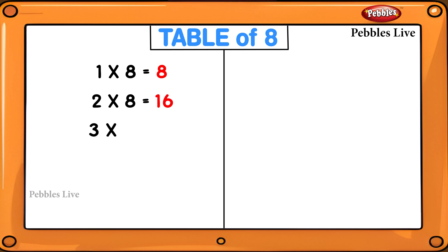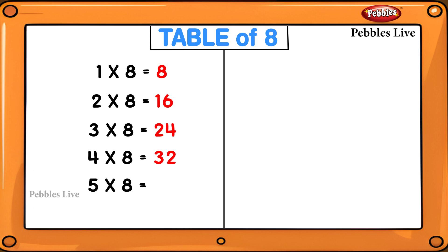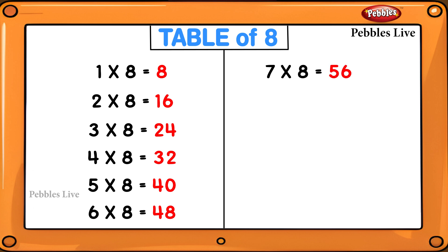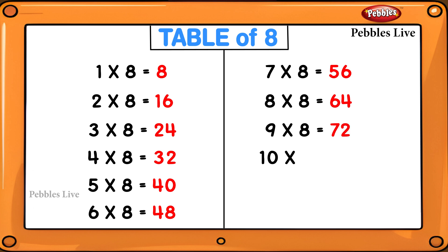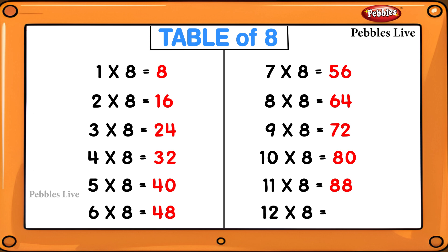1 eights are 8, 2 eights are 16, 3 eights are 24, 4 eights are 32, 5 eights are 40, 6 eights are 48, 7 eights are 56, 8 eights are 64, 9 eights are 72, 10 eights are 80, 11 eights are 88, 12 eights are 96.